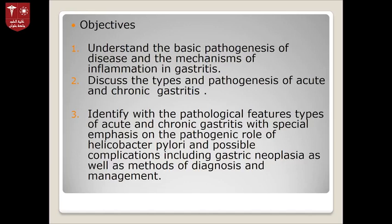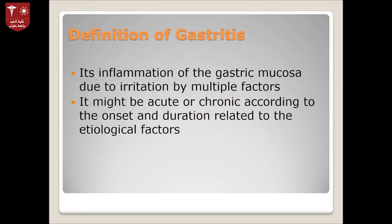Our objectives are to understand the basic pathogenesis of the disease and mechanism of inflammation in gastritis, discuss the types and pathogenesis of acute and chronic gastritis, identify pathological features with special emphasis on the pathogenic role of Helicobacter pylori, and possible complications including gastric neoplasia, as well as methods of diagnosis and management. Definition of gastritis: an inflammation of the gastric mucosa.